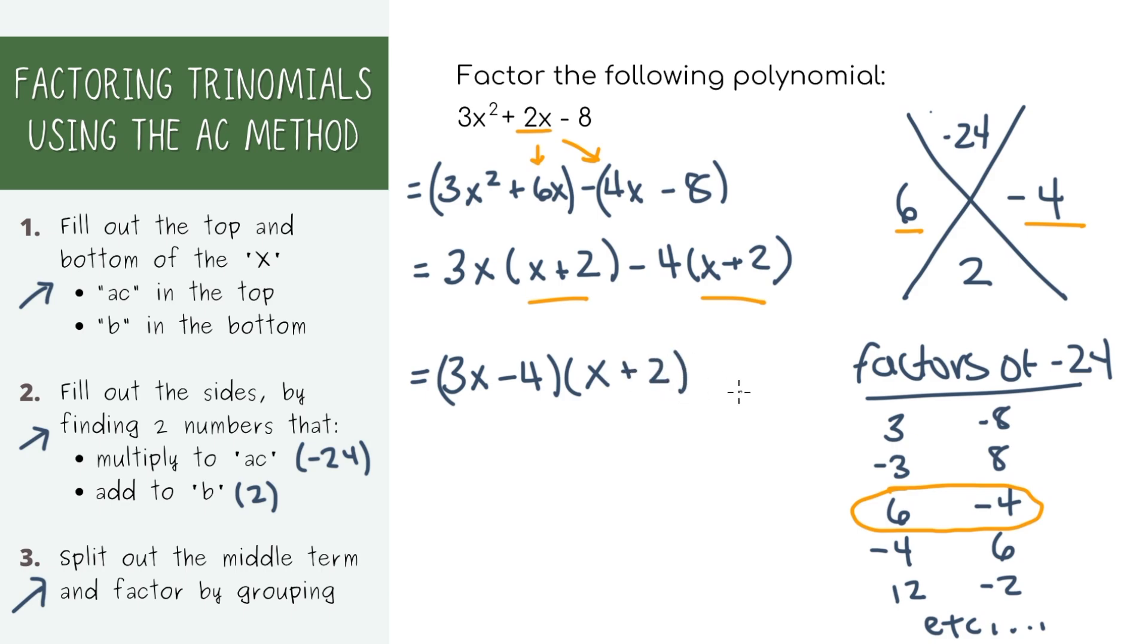Also, if you want to see if you did it right, you just have to FOIL and factor it back out to see if you end up with the original expression. And that's it, you've learned the AC method.